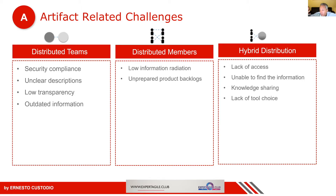Program planning — it's PI planning for those familiar with SAFe. It's about what are we going to achieve over the next quarter. In the case of SAFe, let's look at our high-level objectives, decompose those, look at the dependencies, and agree on which teams are going to work on what and by when.